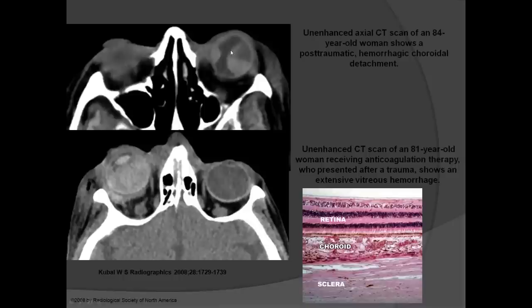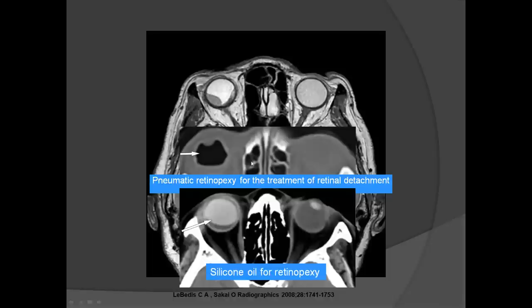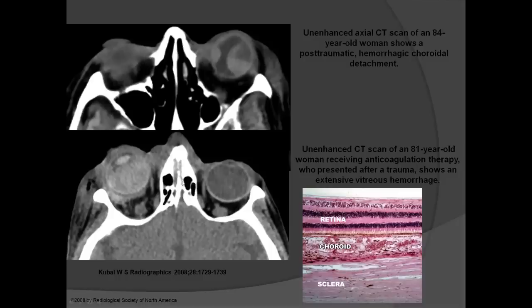There are different types of hemorrhage: choroidal hemorrhage occurs between the choroid and sclera with a characteristic shape, subretinal hemorrhage between the retina and choroid has a different shape, and patients on anticoagulation with minor trauma can have hemorrhage into the vitreous portion of the eyeball.